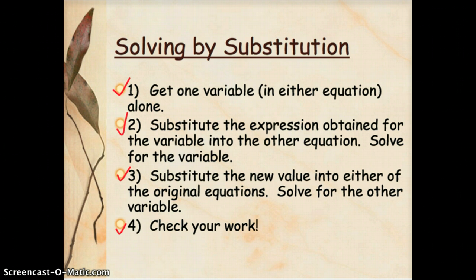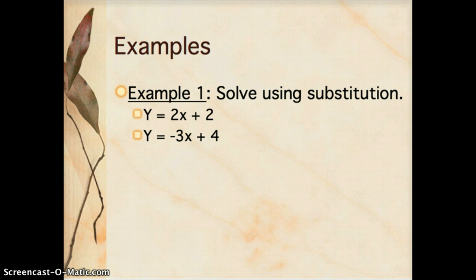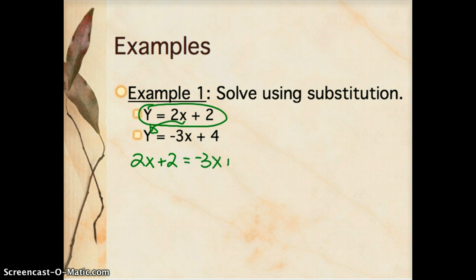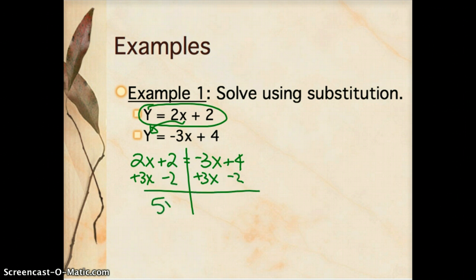This next one is probably the easiest type. Solve using substitution: y equals 2x plus 2, and y equals negative 3x plus 4. This is nice because y is alone in both equations. I'm going to take the first value of y, which is 2x plus 2, and substitute that in for y in the second equation. So 2x plus 2 equals negative 3x plus 4. Adding 3x to both sides and subtracting 2 from both sides gives 5x equals 2, so x equals 0.4, or 2 fifths.